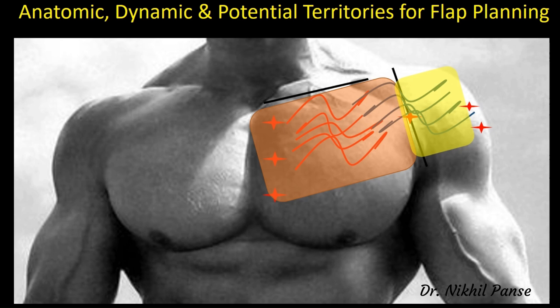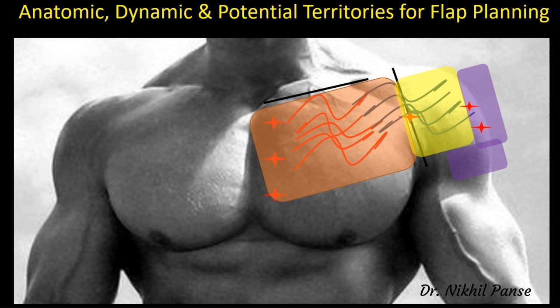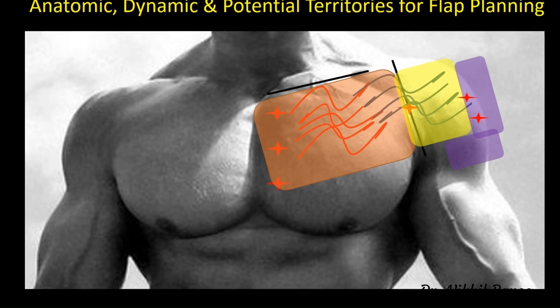Beyond the dynamic territory, if we encroach upon the cutaneous supply of the deltoid branch of the thoracoacromial axis or the anterior circumflex humeral artery — the area over the deltoid muscle — that would be called the potential territory for flap harvest in the case of the DP flap. This territory cannot be harvested without flap delay. This principle is the same all across the body for all types of cutaneous flaps, and familiarity with the anatomy helps in proper planning.